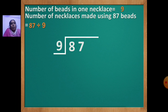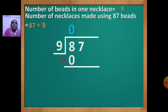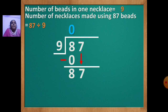Here 8 is smaller than 9, so you cannot divide. So you will write 9 zeros are 0. Draw the line, put the sign of minus. 8 minus 0 is 8. Now bring 7 down to get 87. You have to say the table of 9: 9 ones are 9, 9 twos are 18, 9 threes are 27, 9 fours are 36, 9 fives are 45, 9 sixes are 54, 9 sevens are 63, 9 eights are 72, 9 nines are 81. You cannot take 90 because 90 is bigger than 87. So you will take 81, and write 81 down.